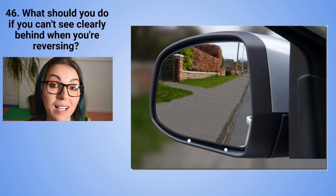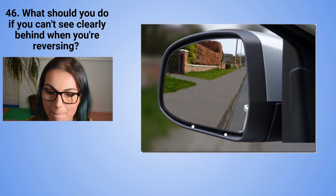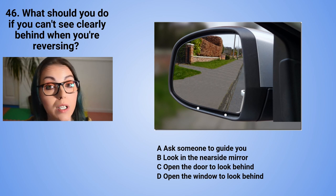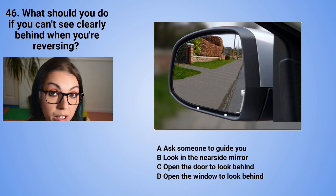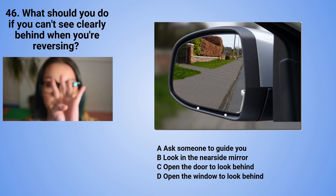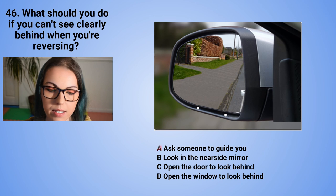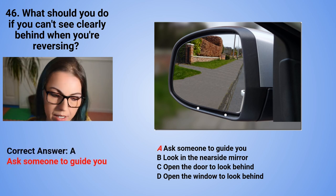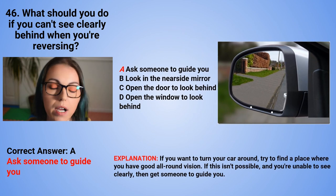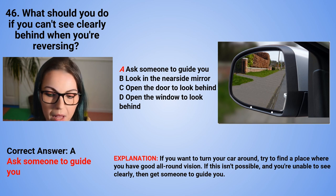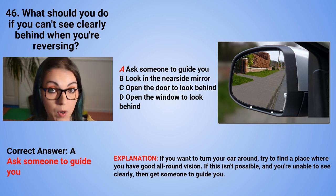Question 46: What should you do if you can't see clearly behind when you are reversing? A. Ask someone to guide you. B. Look in the nearside mirror. C. Open the door to look behind. Or D. Open the window to look behind. The correct answer is A — ask someone to guide you. If you want to turn your car around, try to find a place where you have good all-around vision. If this is not possible and you cannot see clearly, get someone to guide you.